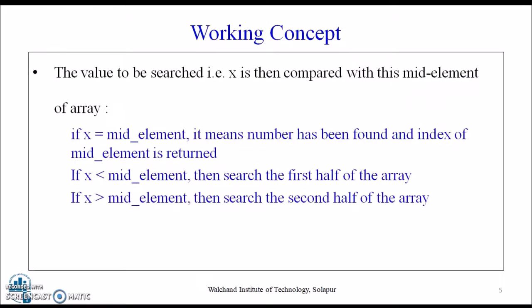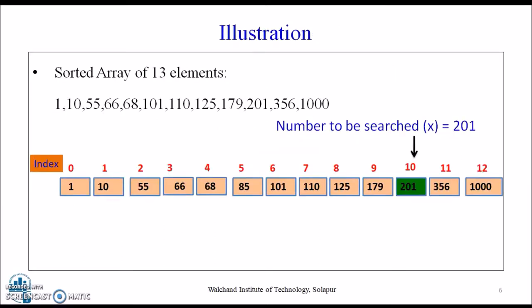Now, in order to search the value x, the working concept of binary search is as follows: if x is the mid element, the number has been found and the index of the mid element is returned. If x is less than the mid element, then search the first half of the array. If x is greater than the mid element, then search the second half. When we search either half, we apply the same three principles again. So binary search is a divide and conquer algorithm.